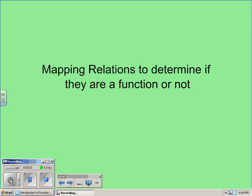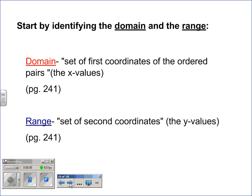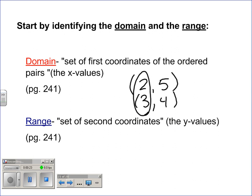We are talking about functions again, and we are going to start mapping functions. To map functions we need to know what the domain and the range are. The domain is the set of first coordinates of the ordered pairs — basically the x values. The range is the set of second coordinates — basically the y values.